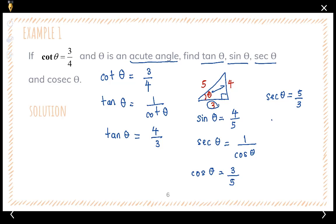The last value to find is cosecant theta. Cosecant theta is one over sine theta, and we already have sine theta as four over five. So one over (four over five) gives us five over four. To answer example one, it is important to draw the right angle triangle and transfer the given information so that you can find the remaining values.